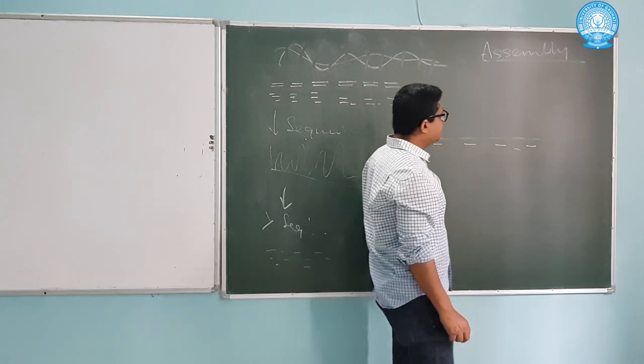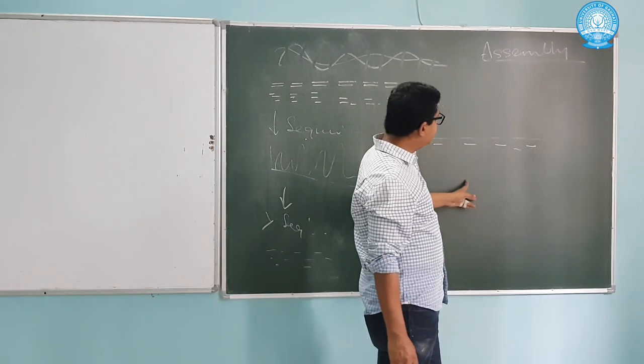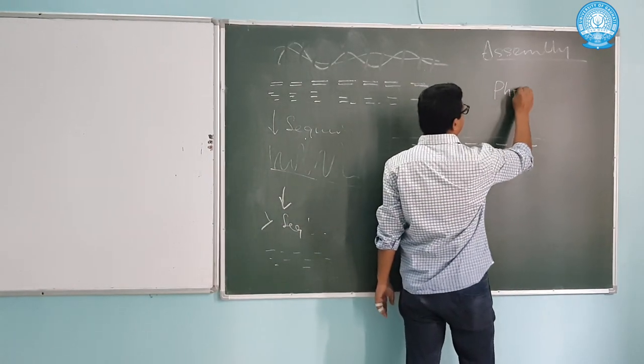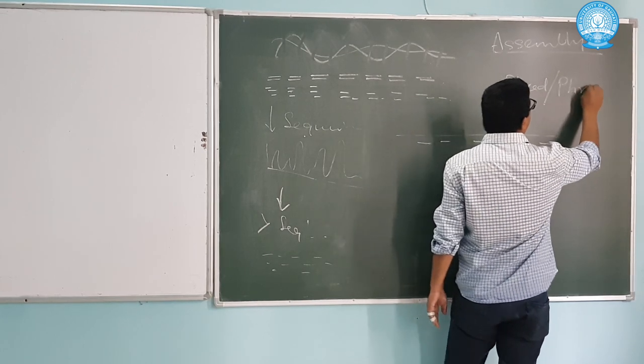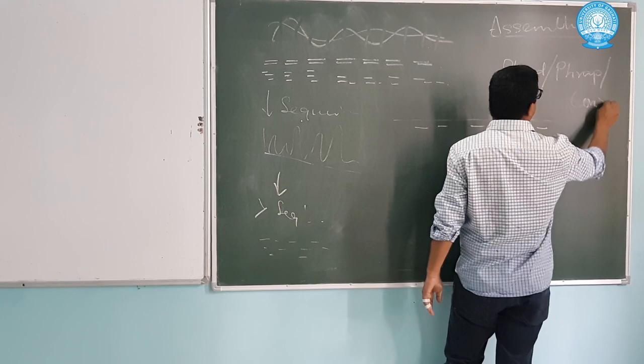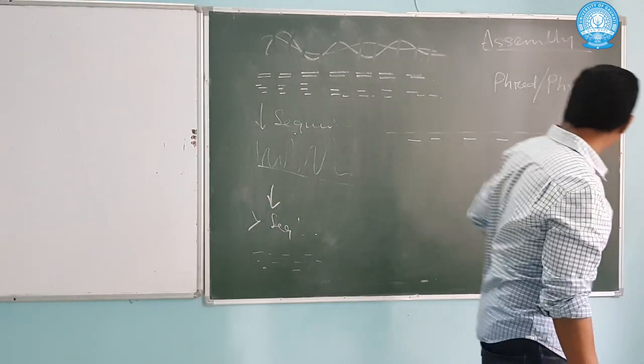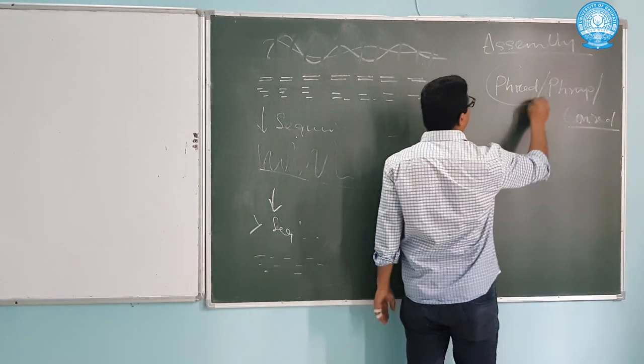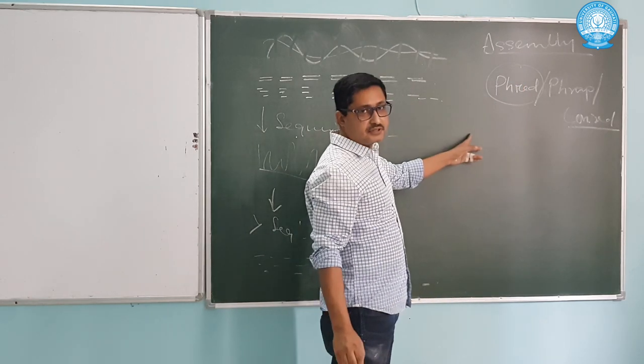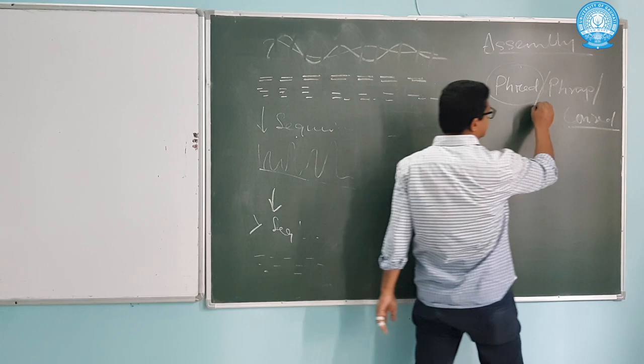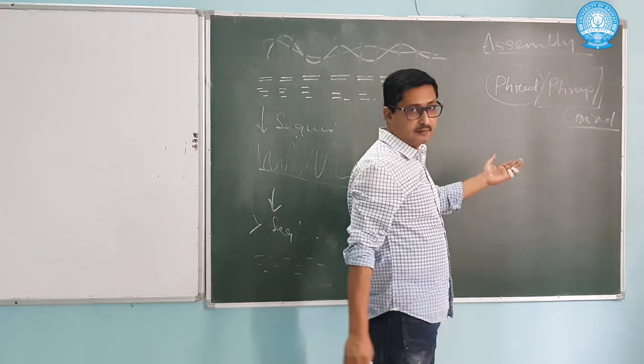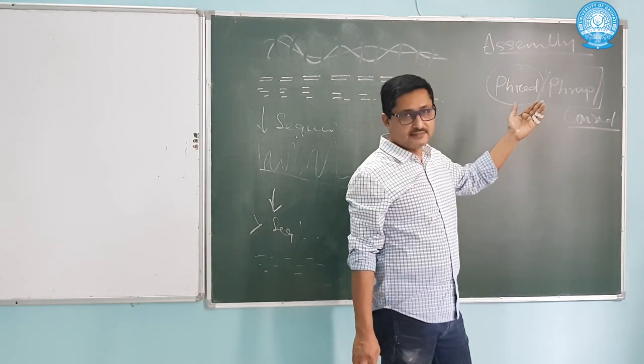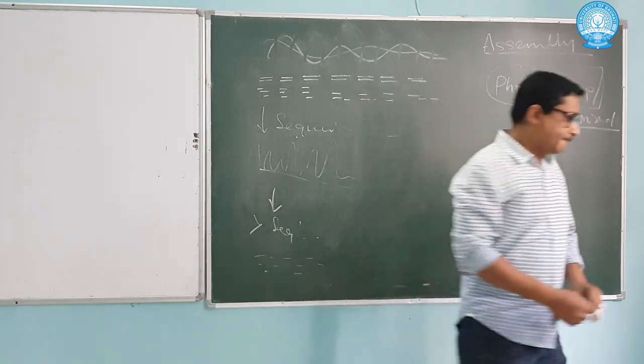For assembly, we are using some software. One software which is very prominent, used in the human genome project, is PHRED/PHRAP/CONSED. This is a complete package. This actually converts your chromatograms into a flat file. This does the assembly, depending upon overlapping sequences. And CONSED is the visual software, which is for the graphics.